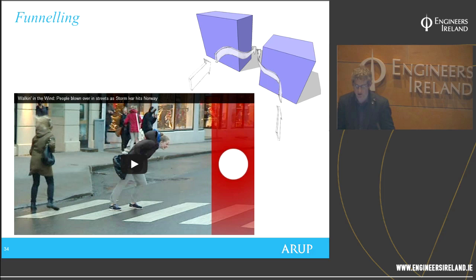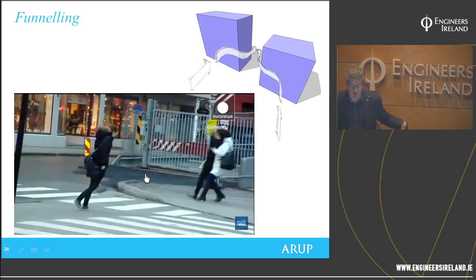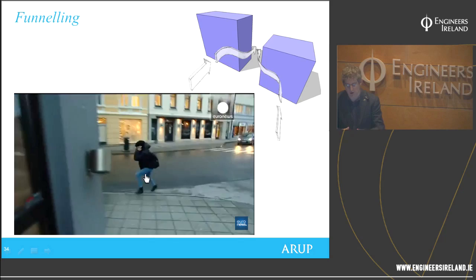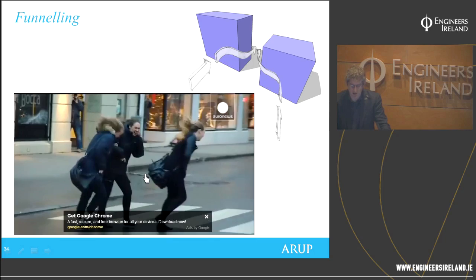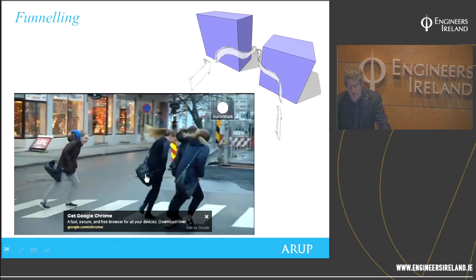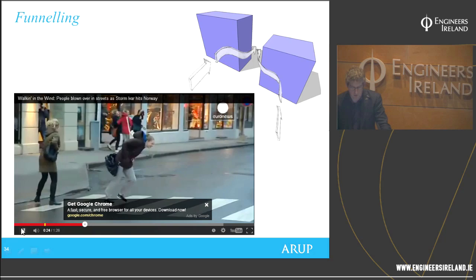One effect to consider is funnelling — wind being forced between two buildings, travelling down a canyon and being accelerated by the narrower space it has to force through. This video shows a storm hitting a city in Norway with wind being funnelled down the streets, showing how difficult it is for people to negotiate.